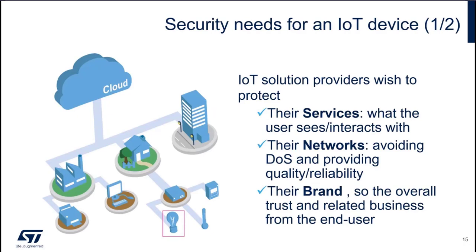So first, the security needs for an IoT device. Since it's connected over the internet, it's important for service providers to make sure that the IoT device is trustworthy — because they wish to protect their services, so what the user sees and interacts with. They want to protect their networks, preventing denial of service, and providing good quality and reliability. And finally, their brand — their reputation, and the overall trust and related business from the end user.